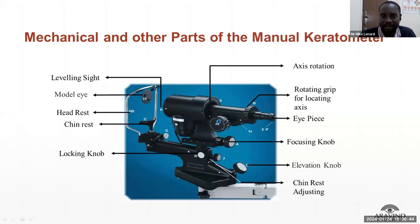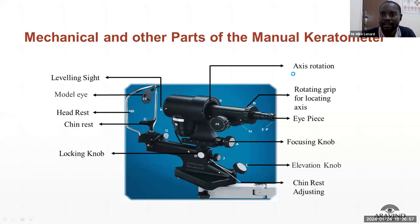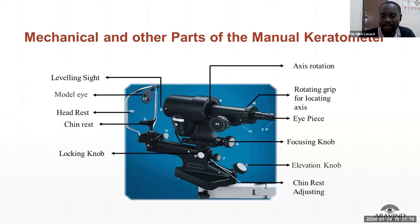There are two drums — one for horizontal and one for vertical meridian, to measure the curvature of the cornea. Other parts include the rotating grip axis, a leveling site, and the model eye used for calibration. There is also a head rest and chin rest. Those are the main mechanical parts of the manual keratometer.